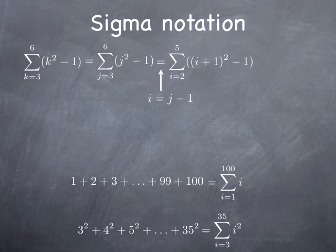And then when j is 3, then i is 2. When j is 6, then i is 5. And I can replace j by i plus 1 in the expression. Of course, I obtain the same sum.